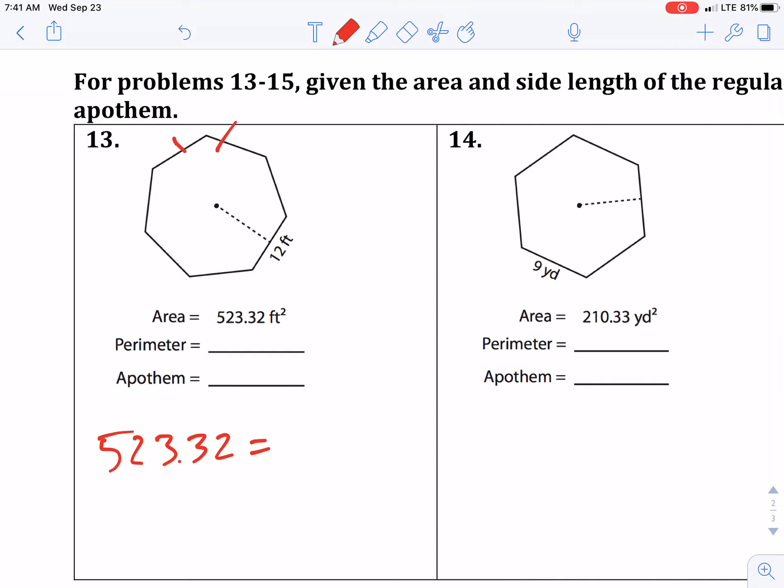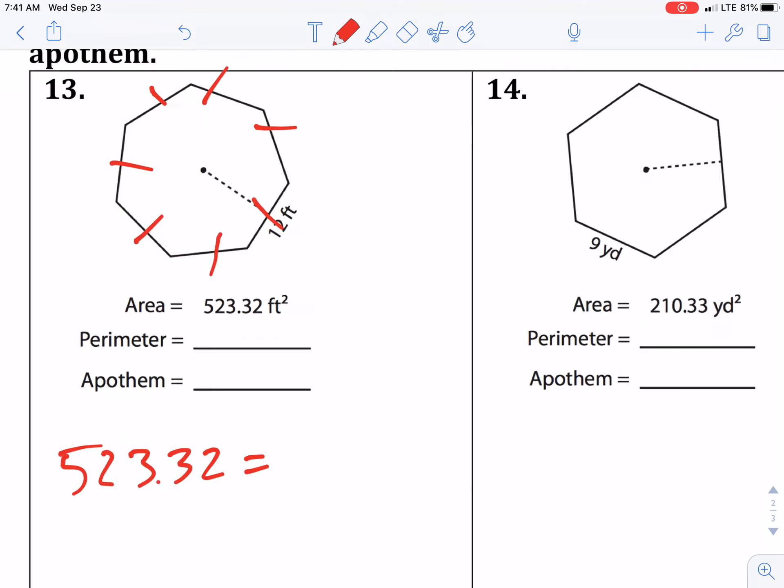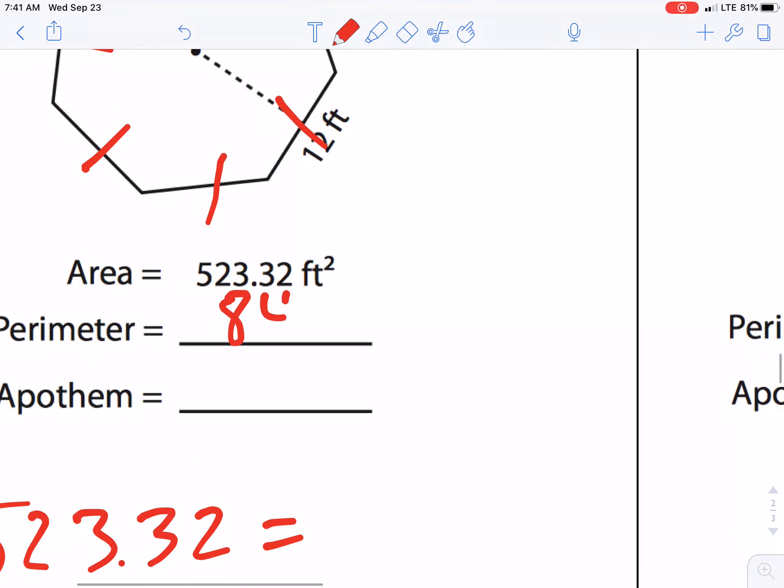This has seven sides. Again, seven times 12 is 84, so the perimeter is 84 feet.